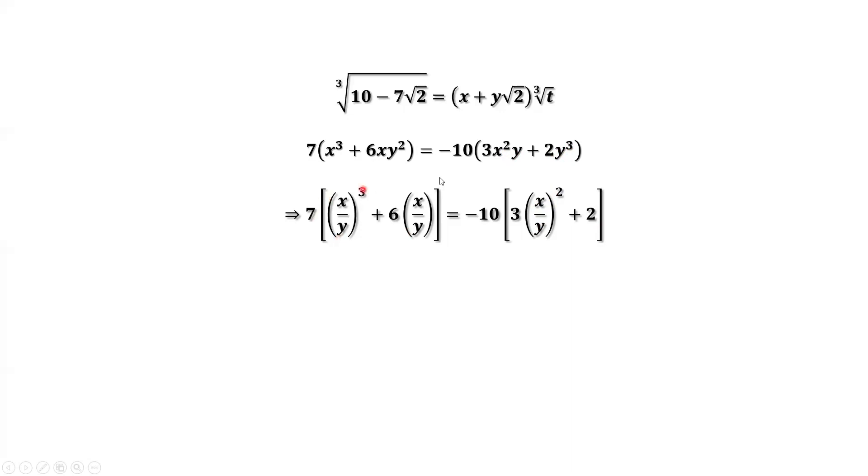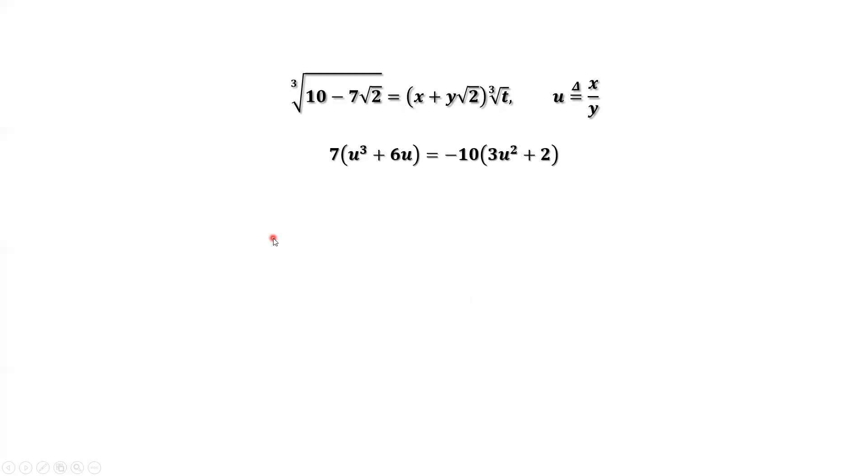We can consider this equation only has one variable, x over y. We can define a new variable called u. u equals x over y. Replace x over y by u. In this equation we have 7 times u to the power of 3 plus 6u equals negative 10 times 3u squared plus 2. Simplify. We have this equation. This is a third power equation. How to solve this third power equation?